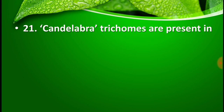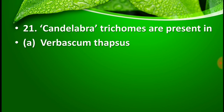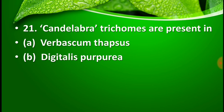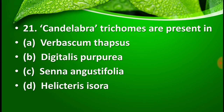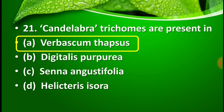Question number 21: Candelabra trichomes are present in — option A: Verbascum thapsus, option B: Digitalis purpurea, option C: Senna augustifolia, and option D: Helichrysum. The right answer is option A — Verbascum thapsus. Candelabra trichomes are present in Verbascum thapsus. This is a very important question asked many times in exams like GPAT and Pharmacist.